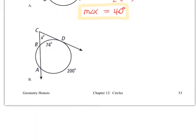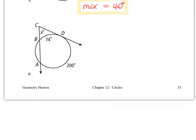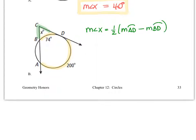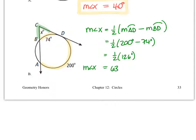In example B, the vertex is at point C, and we're again trying to find the measure of this angle. We find the intercepted arcs — here's the big one, here's the smaller one. The measure of angle X is equal to one-half the measure of the large arc AD minus the measure of the small arc BD. Substituting in: one-half of 200 degrees minus 74 degrees gives us angle X equal to 63 degrees.